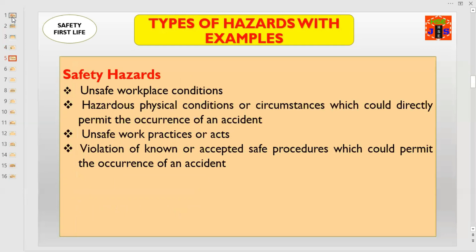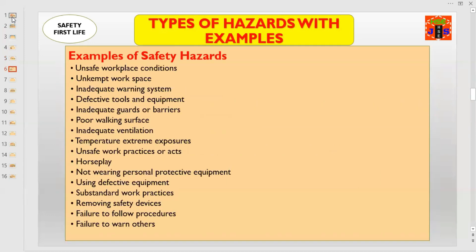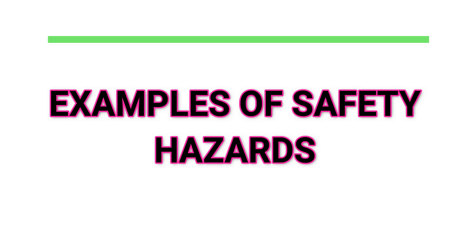We'll discuss all categories of hazard one by one. First of all, we'll start with safety hazards. Safety hazards are unsafe workplace conditions — hazardous physical conditions or circumstances which could directly permit the occurrence of an accident — unsafe work practices or acts, and violation of accepted safe working procedures which could permit the occurrence of an accident. These all are the different forms or conditions of safety hazards.